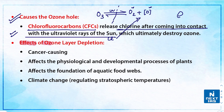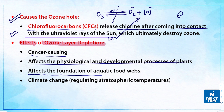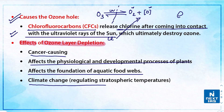The effects of ozone layer depletion include: it is cancer-causing; it disturbs the photosynthesis rate of plants, affecting their physiological and developmental processes; it affects the foundation of aquatic food webs; and it is also responsible for climate change by regulating stratospheric temperature.